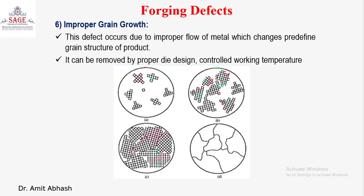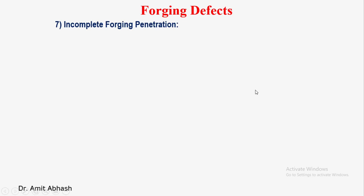If not controlled, improper grain growth will negatively affect the final mechanical properties of the material. So just take care of these things. The next defect is incomplete forging penetration.